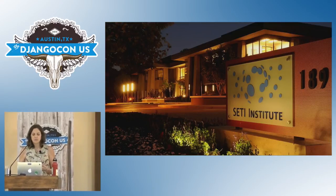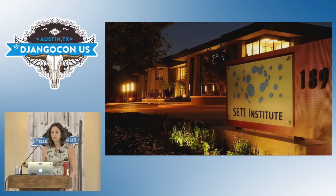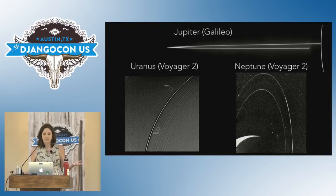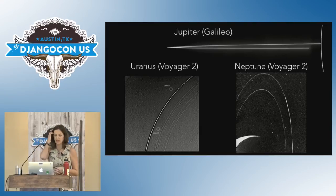Basically anything related to the study of life and habitability in the universe. Our group at SETI is a NASA-funded data archive and our scientific leadership are experts in planetary ring-moon systems. Many people are aware that Saturn has these epic, beautiful rings, but a lot of people don't realize that Jupiter, Neptune, and Uranus actually have rings as well. We at the rings node archive data from missions to these planets and support researchers in this field.